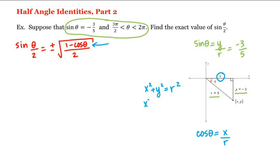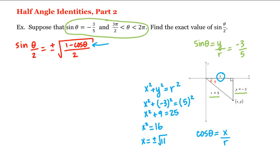Therefore, x squared plus negative three squared is equal to five squared, or x squared plus nine equals 25, so x squared equals 25 minus nine, which is 16. That means x is equal to plus or minus the square root of 16, or plus or minus four. But x is in quadrant four, and in quadrant four x is greater than zero, so we choose the positive value.